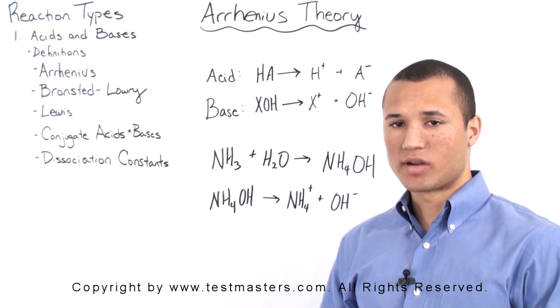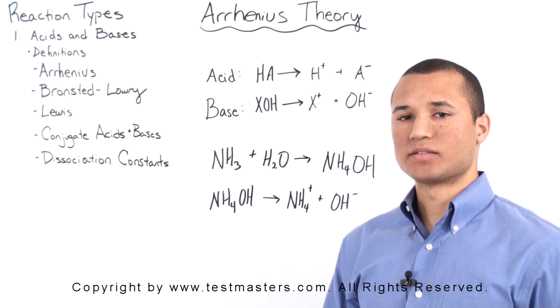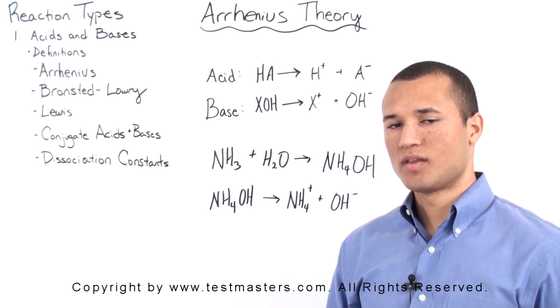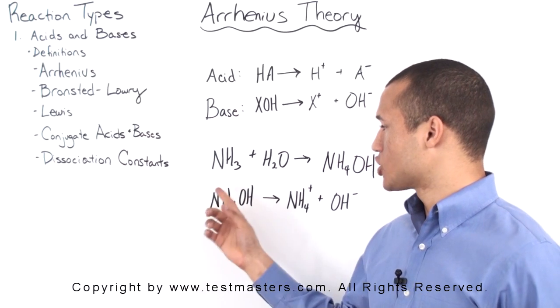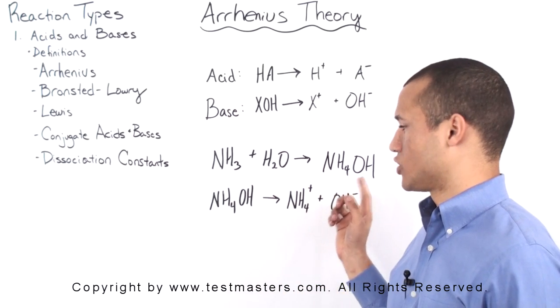This led to the classically incorrect explanation for how ammonia, NH3, acts as a base in water. According to Arrhenius, NH3 combines with a molecule of water, H2O, to form NH4OH.